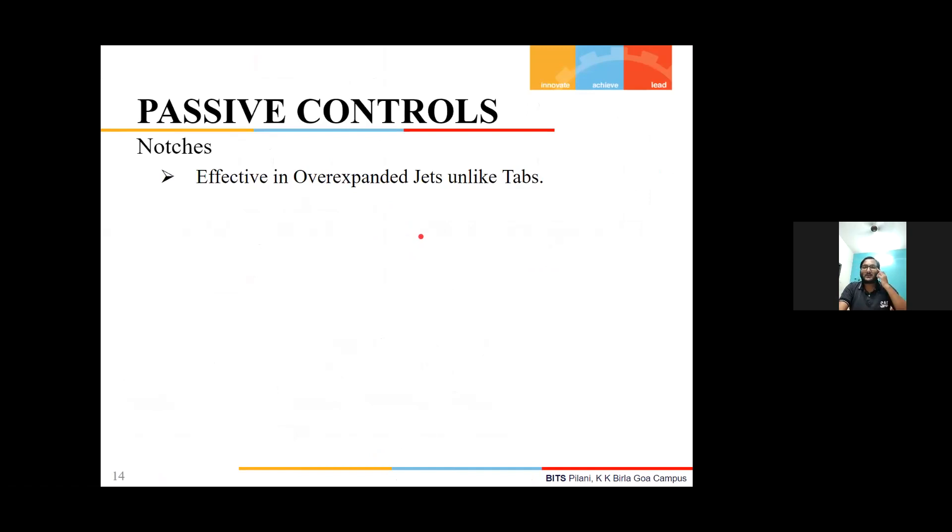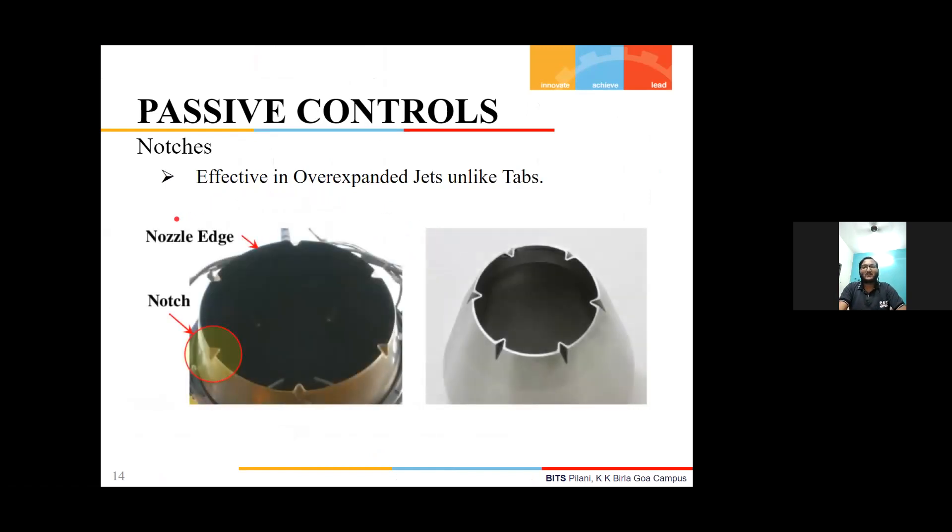Another method which is effective in over-expanded jets is notches. Notches are effective in over-expanded jets, unlike tabs which were effective in under-expanded. These are geometries made through removal of material from the jet throat exhaust.